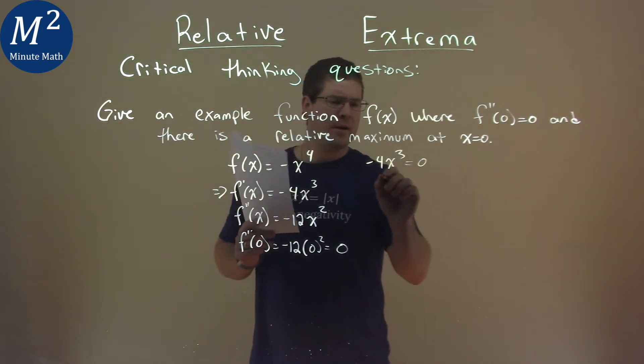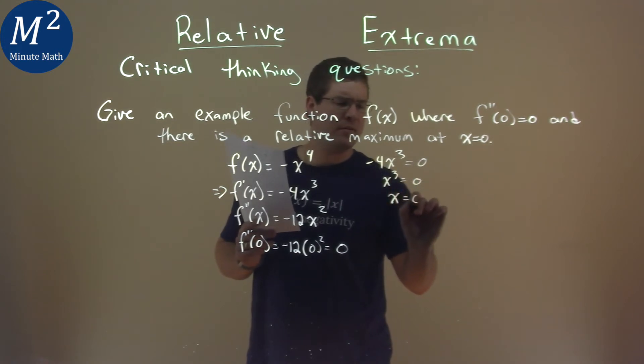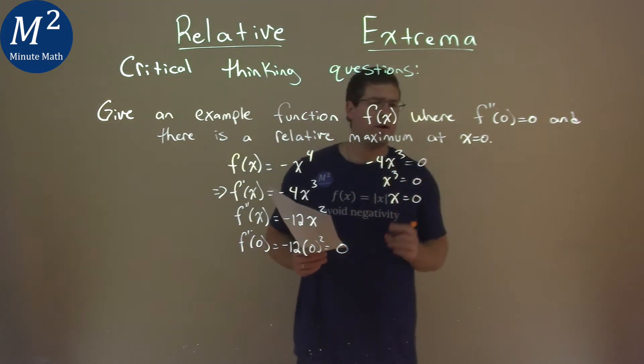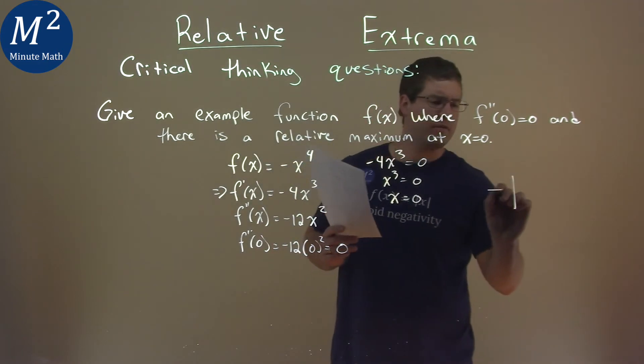Well, divide both sides by -4, x^3 = 0, and the third root of both sides is x = 0. Critical point at x = 0, let's do our first derivative test.